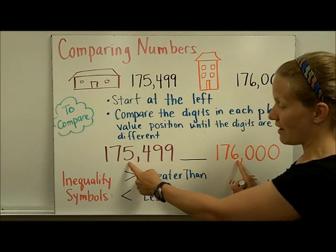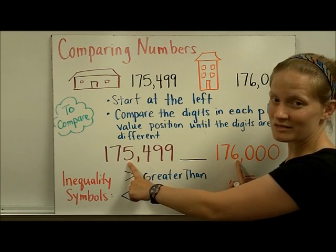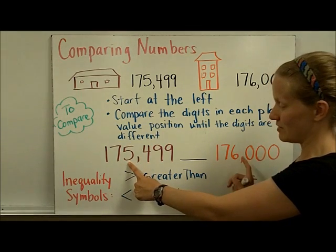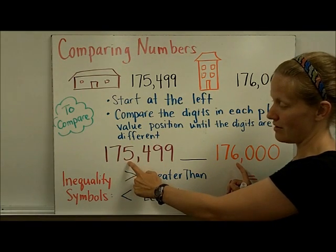In the thousands place, we have something different. So that means that this number, this entire number is going to be larger than this entire number.